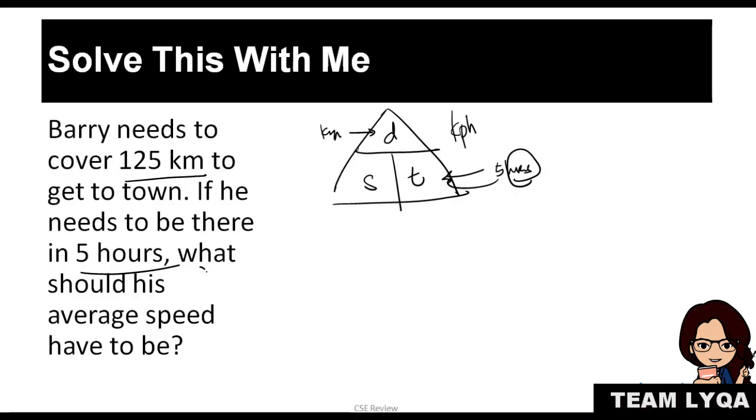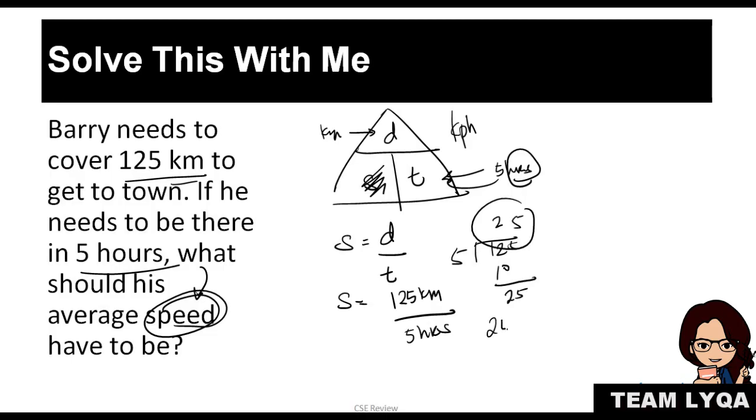Again, what's missing here is speed. Since speed is missing, you cover it. So the formula is speed equals distance over time. So you have speed equals, substitute, 125 kilometers over 5 hours. And then divide. 125 divided by 5 is 25. So the answer is 25 kilometers per hour.